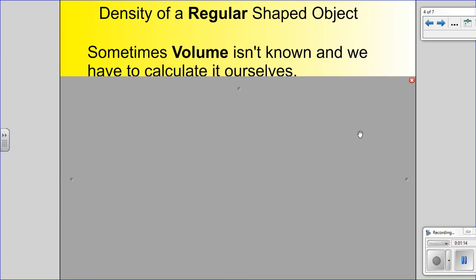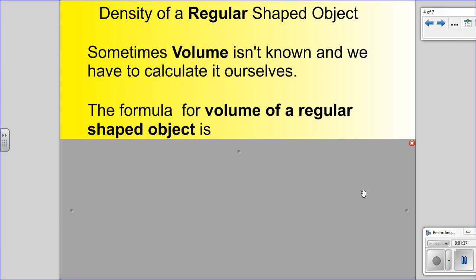Density of a regular shaped object. Sometimes the volume isn't known and we have to calculate it ourselves. Last week I gave you some problems that had mass and volume already. This week you're going to have an object in front of you that you have to actually calculate the volume, and you're only given the mass. So there's a formula for that. If you have a regular shaped object, we're talking about objects that you can measure with a ruler, for example, a cube or a rectangular prism.